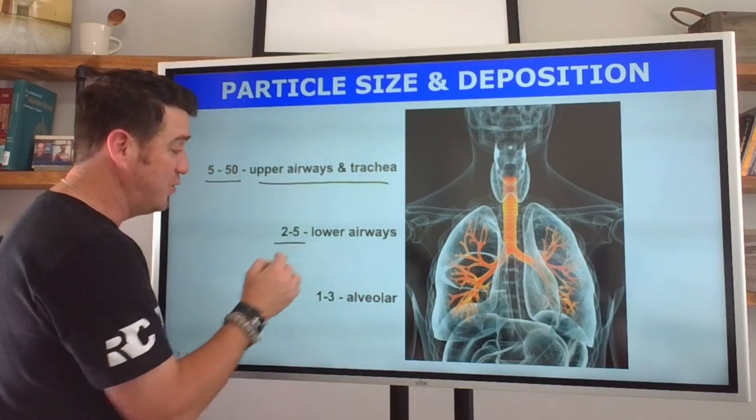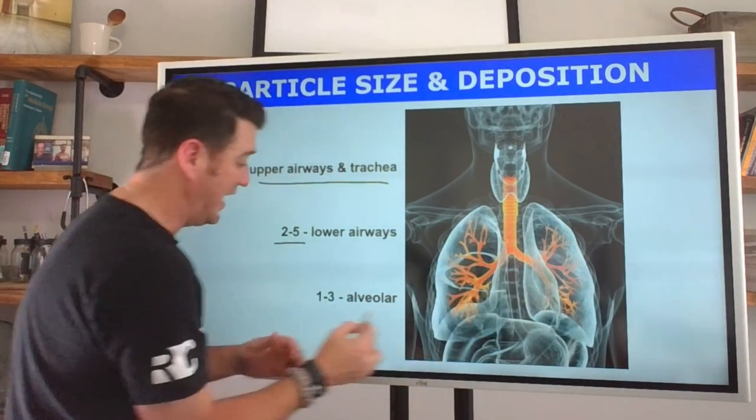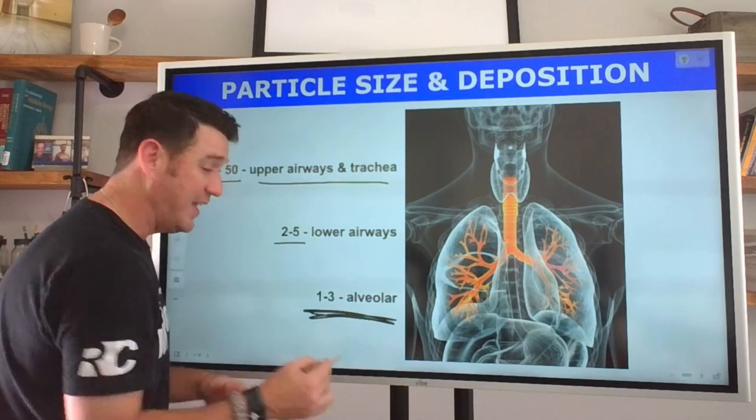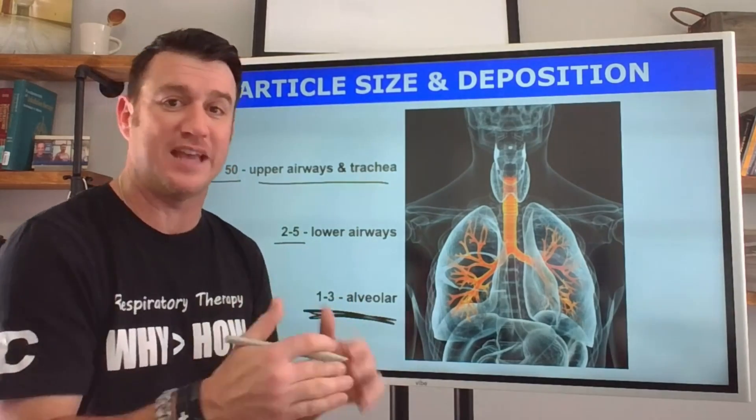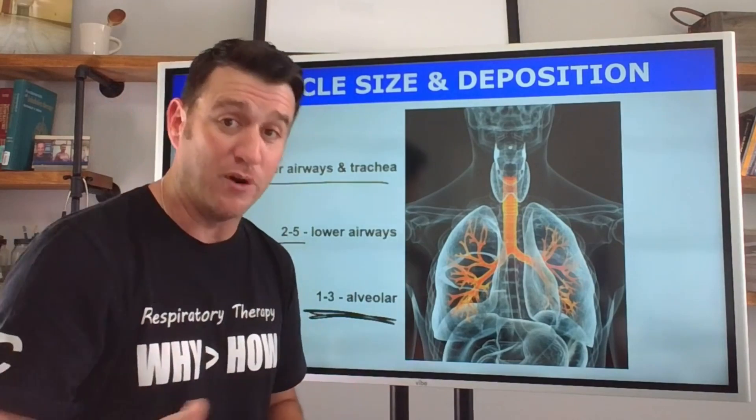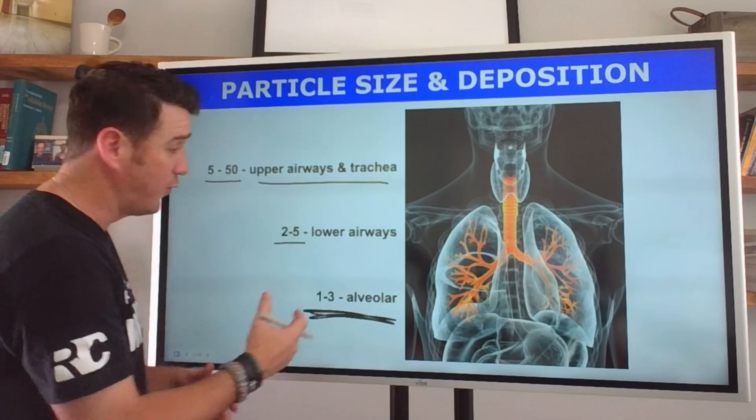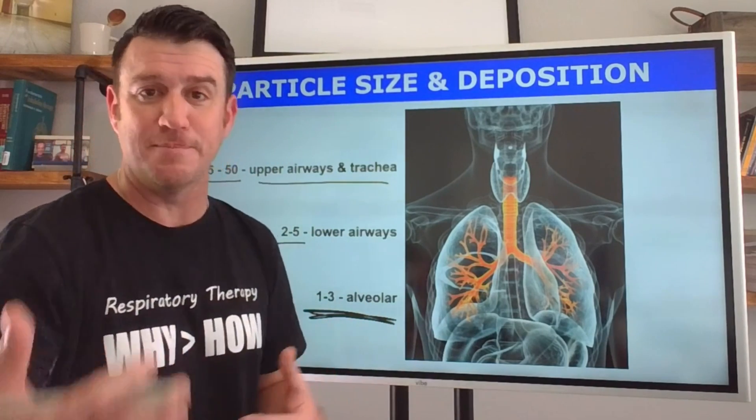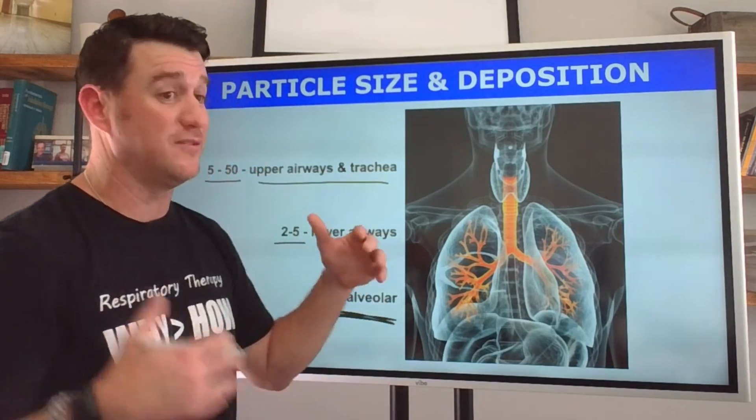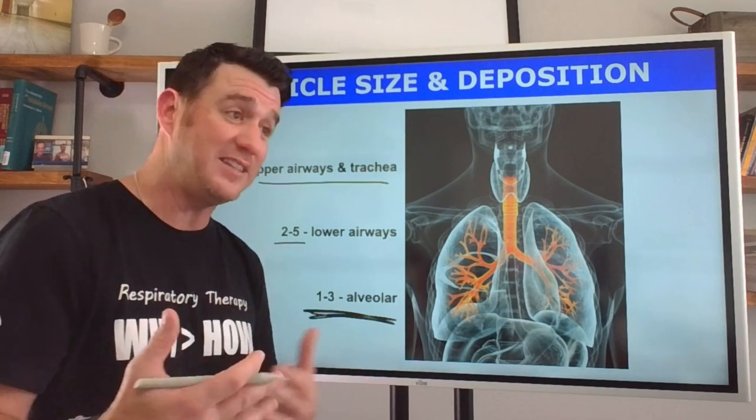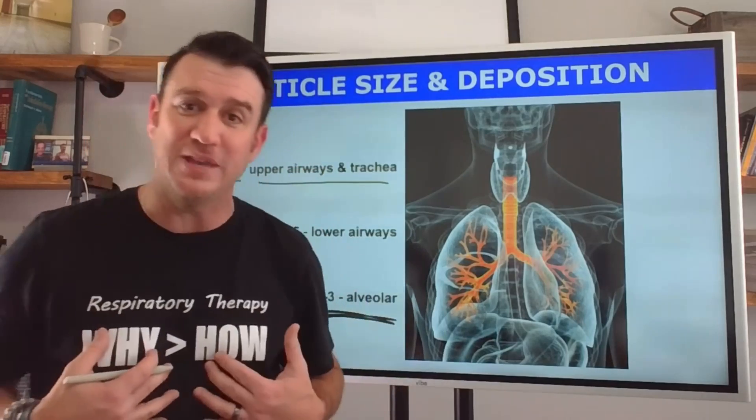When we go 2 to 5 micrometers we're starting to get into the lower airways. When we look at 1 to 3 even down to 0.5 we see that now we're talking about delivery of aerosolized particles down to the alveolar level. This is where they're going to fall out of suspension and deposit. Particle size matters and we have to be aware of that so we understand that when different devices come out that talk about different particle sizes, that's why it matters.